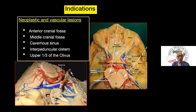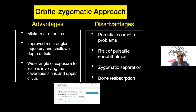What are the indications? Neoplastic and vascular lesions involving the anterior cranial fossa, medial cranial fossa, paracellular region, in particular the cavernous sinus, interpedicular cistern, and we can reach all the way to the upper clivus. The advantage is it minimizes or eliminates retraction, improves multi-angle trajectory, shallower depth of field, and wider angle of exposure to lesions involving the cavernous sinus and upper clivus.